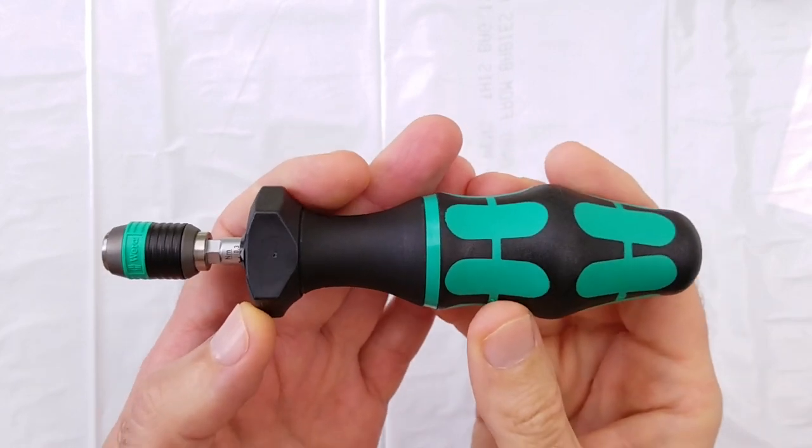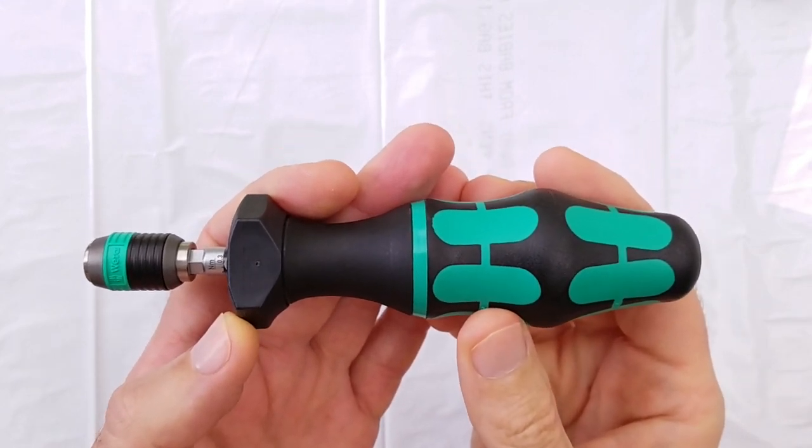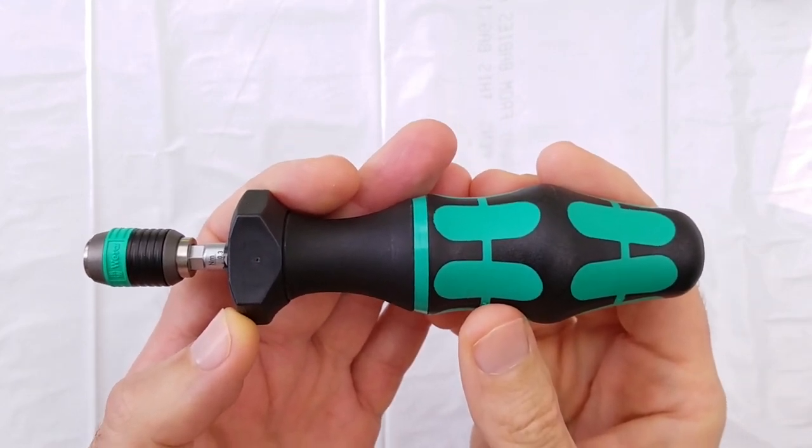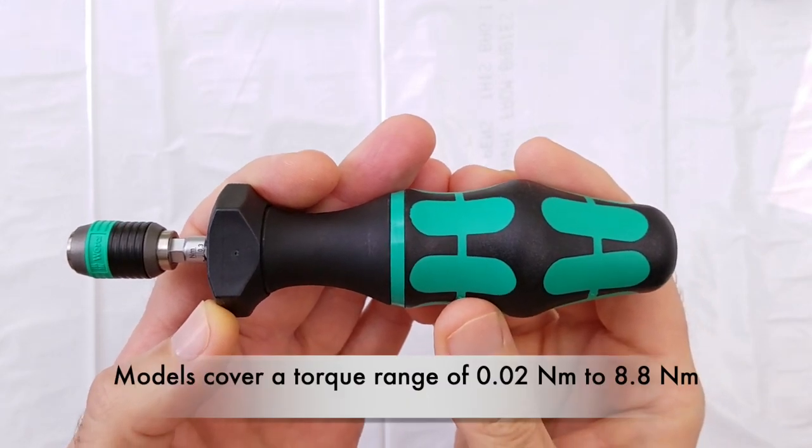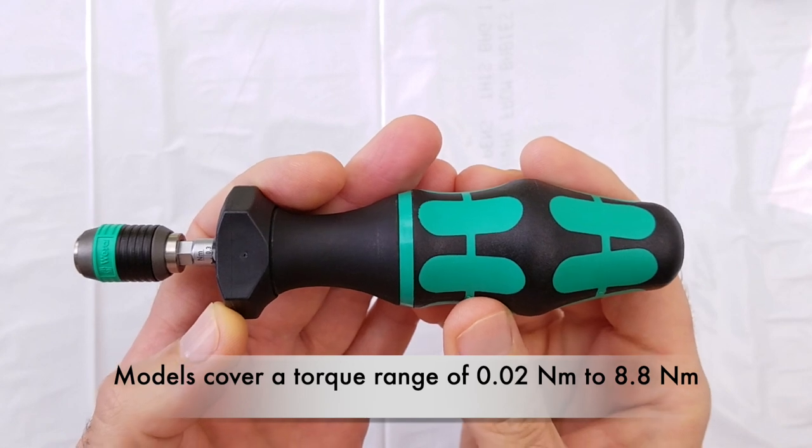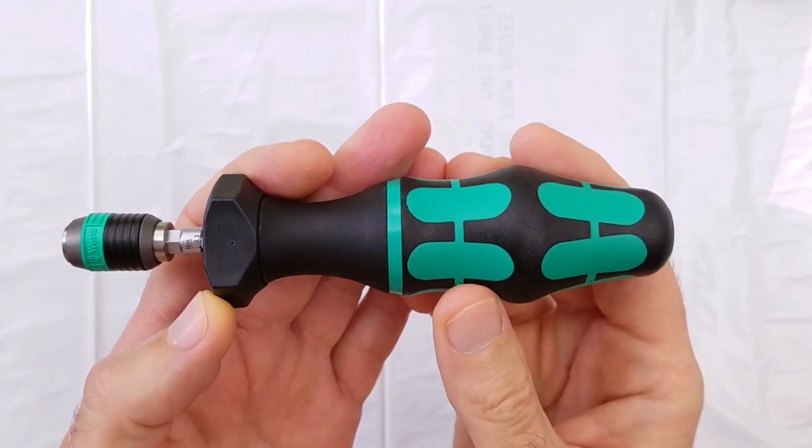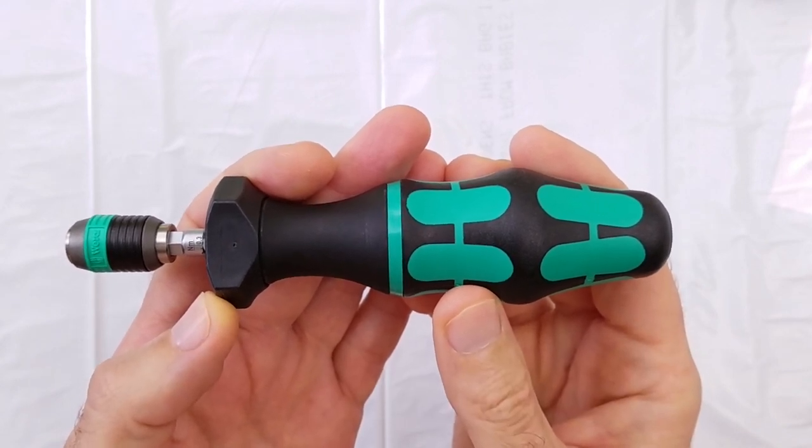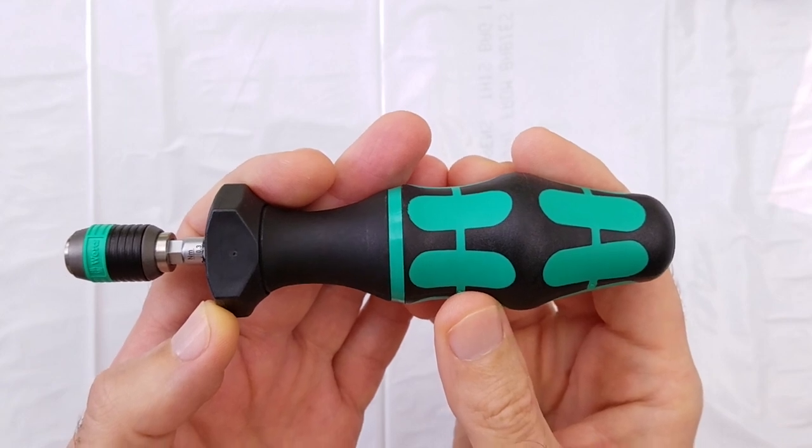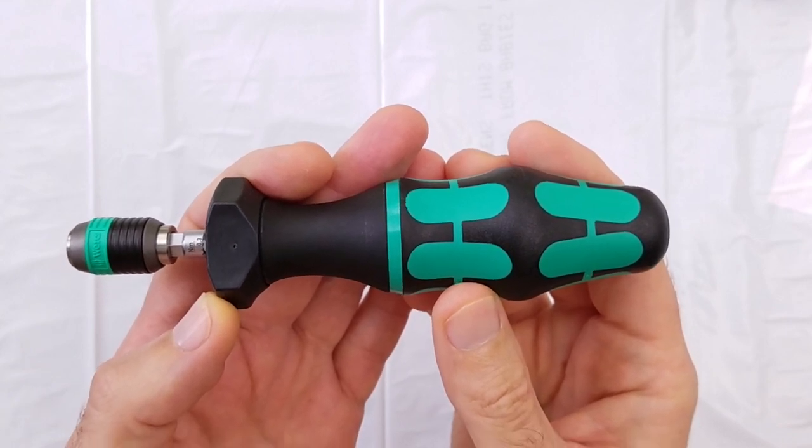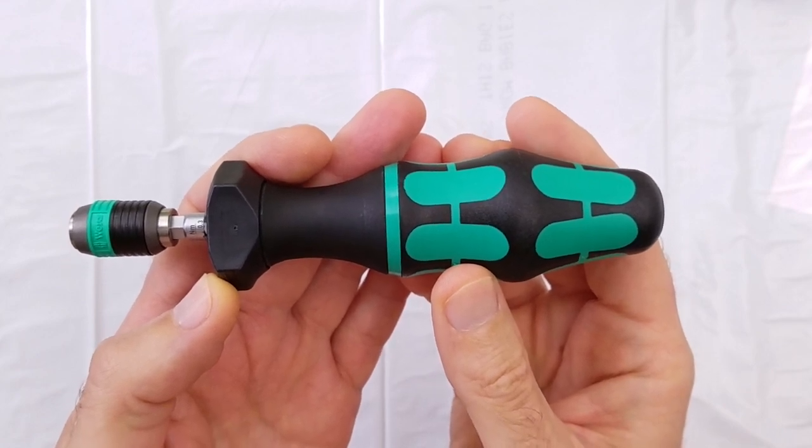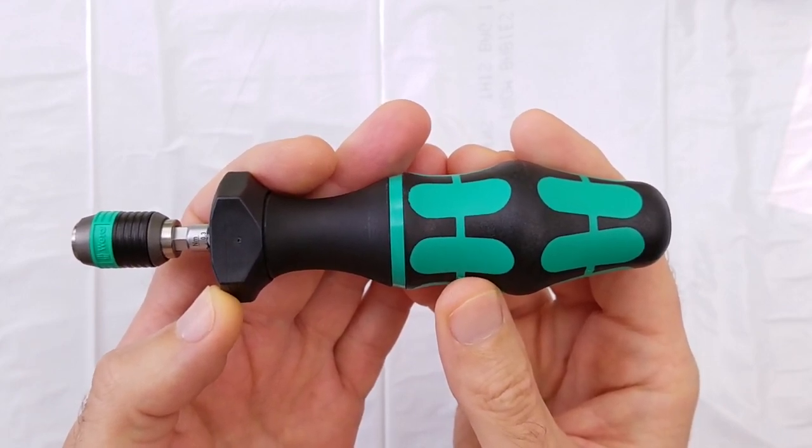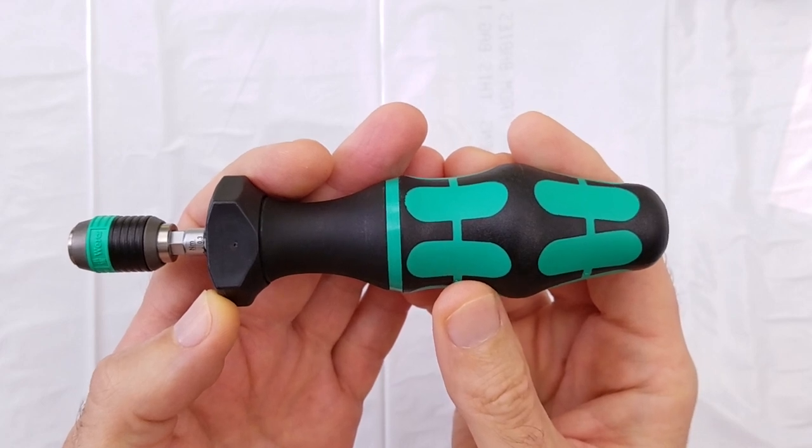Wera makes a number of models of torque screwdrivers, covering a torque range all the way down from 0.02 Nm up to 8.8 Nm. And they also make ESD variants, electrostatic discharge variants, which have a yellow colored handle instead of green. And they also make models with both metric and imperial units.